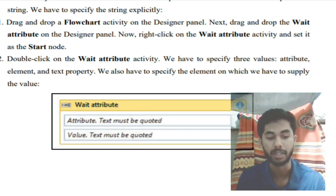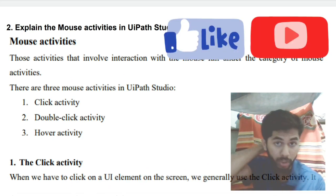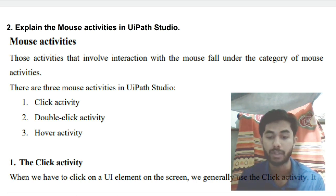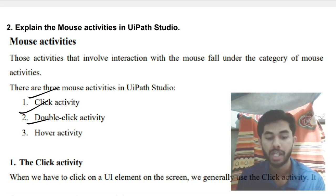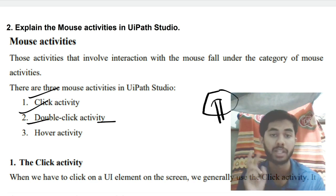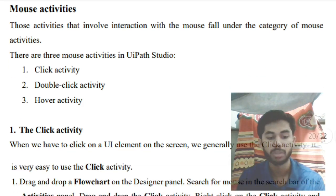Moving on to the second super important question: explain the mouse and keyboard activities in UiPath Studio. This is the most expected question from an exam point of view. For mouse activities, there are three things: Click, Double Click, and Hover. Click performs a single click on an indicated element, Double Click performs two clicks, and Hover simply brings the mouse cursor on top of the element.